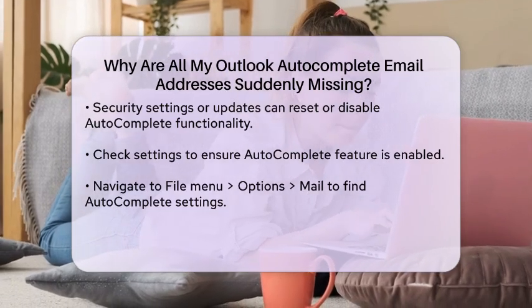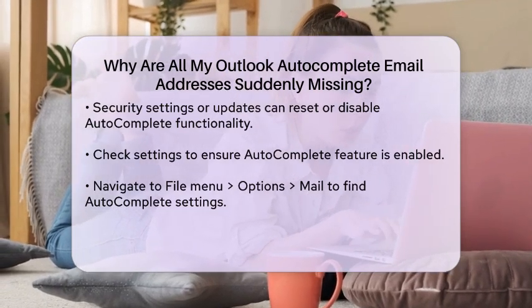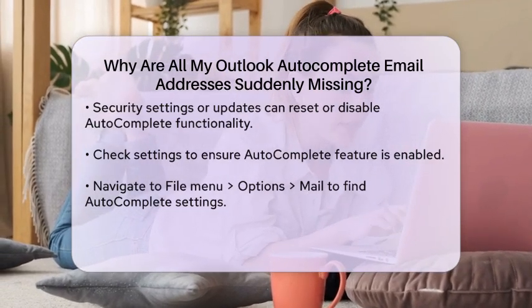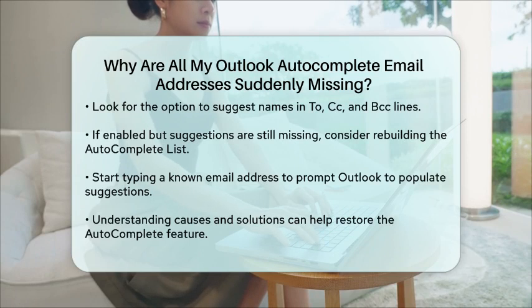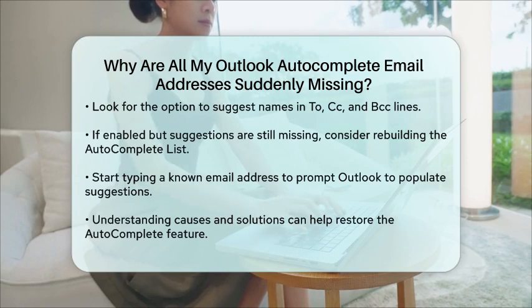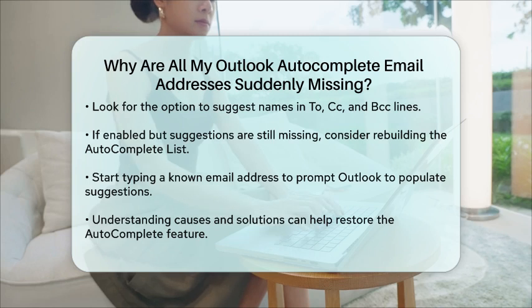If the feature is enabled and you still do not see any suggestions, you may need to rebuild your Autocomplete list. This can be done by starting to type an email address you know you have used before. Outlook should begin to populate suggestions based on your previous interactions.